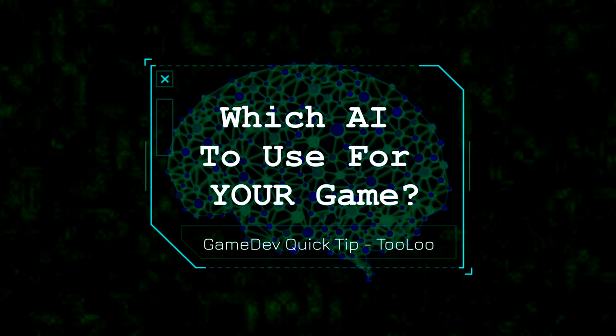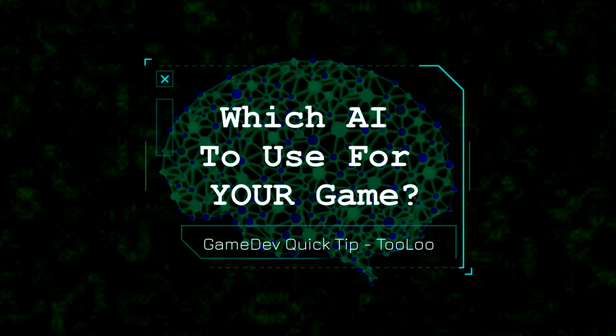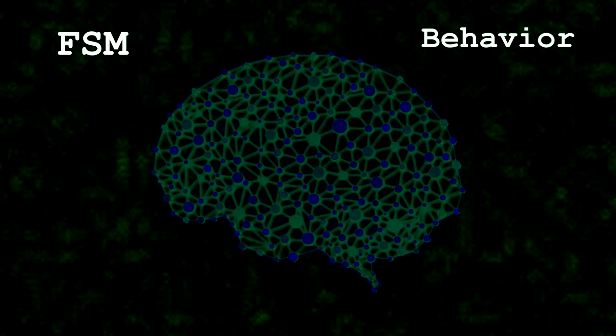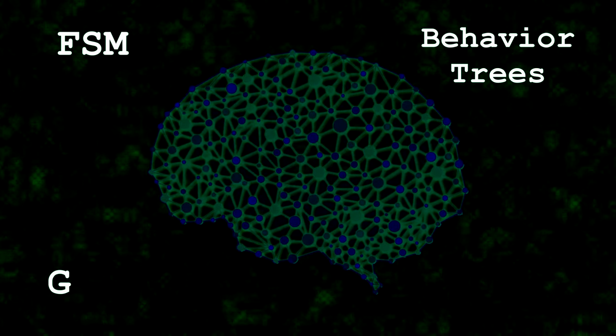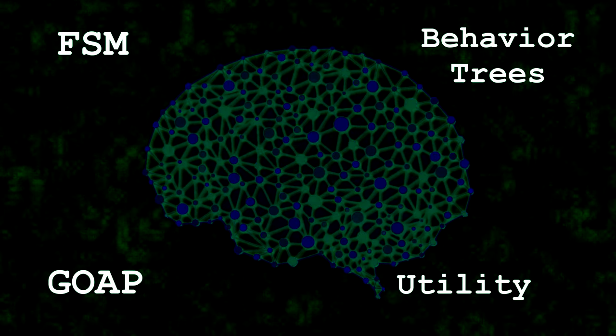At the moment, there are four general frameworks that most video game AI use: finite state machines, behavior trees, goal-oriented action planning, and utility AI.